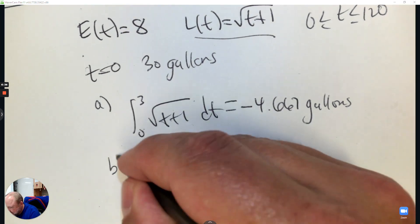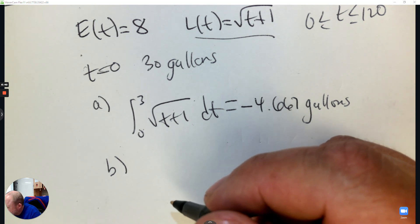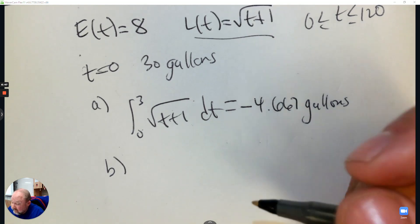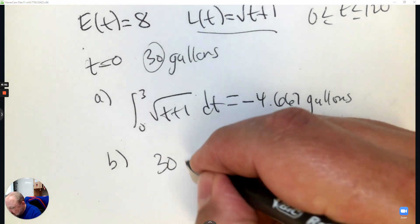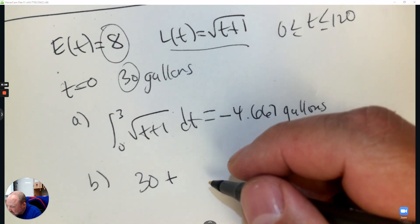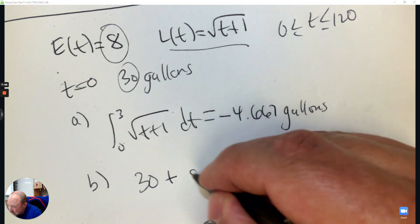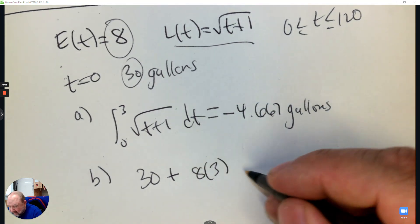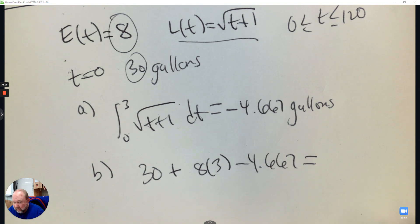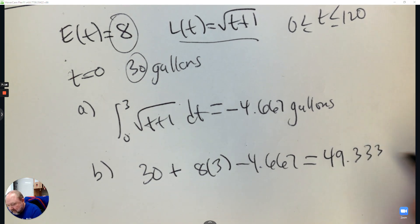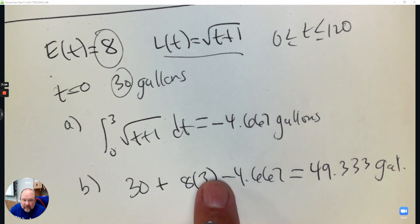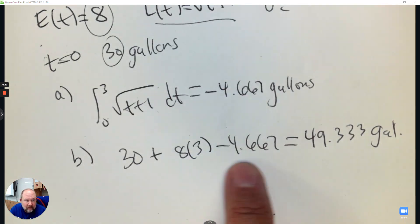Part B: how many gallons of water are in the tank at T equals three minutes? We started with 30, and then we're gaining eight gallons every minute — a constant eight gallons per minute — so that would be eight times three. That's how many we're gaining. And then we have to subtract what we're losing. So altogether it's about 49.33 gallons — 30 plus eight times three, minus what we're leaking.